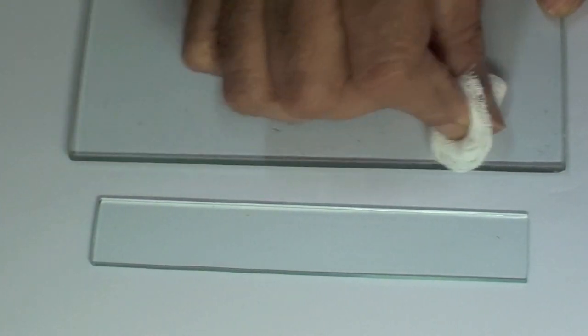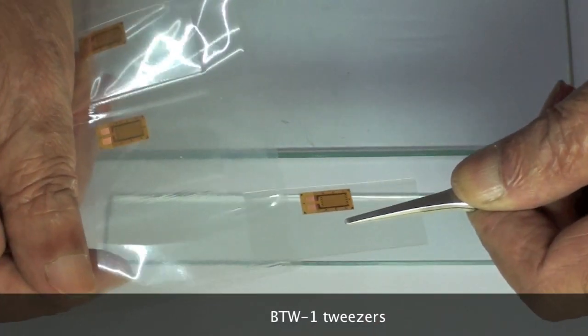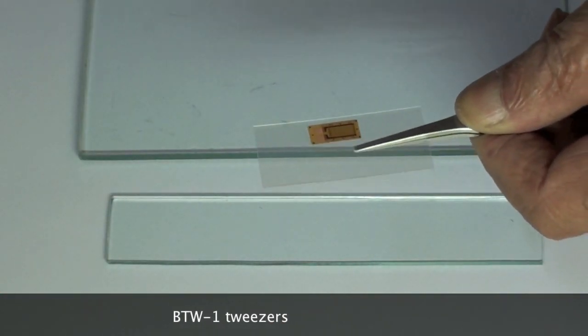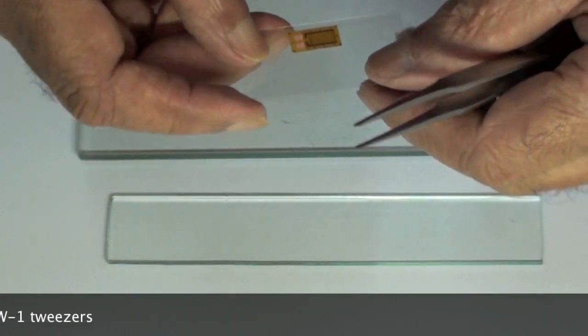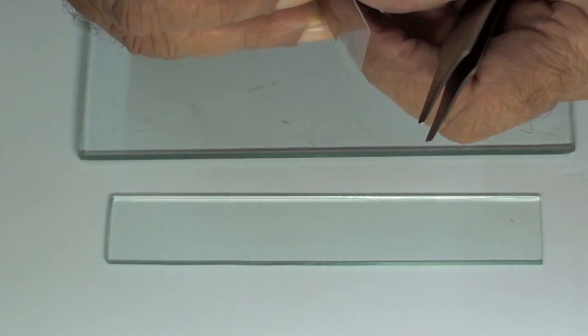To handle a strain gauge safely, a blunt tipped tweezers such as the PTW-1 is used to remove the gauge from its packing and lay it on the glass plate which is cleaned with neutralizer, making sure that the top side of the gauge is facing up.